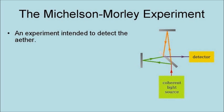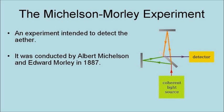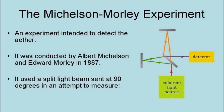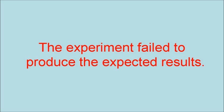The Michelson-Morley experiment was an experiment intended to detect the ether. It was conducted by Albert Michelson and Edward Morley in 1887. It used a split light beam sent at 90 degrees in an attempt to measure the small variations in light travel time in different directions caused by the Earth's motion through the ether. The experiment failed to produce the expected results. This forced a rethink of light propagation theory, eventually leading to the abandonment of luminiferous ether.